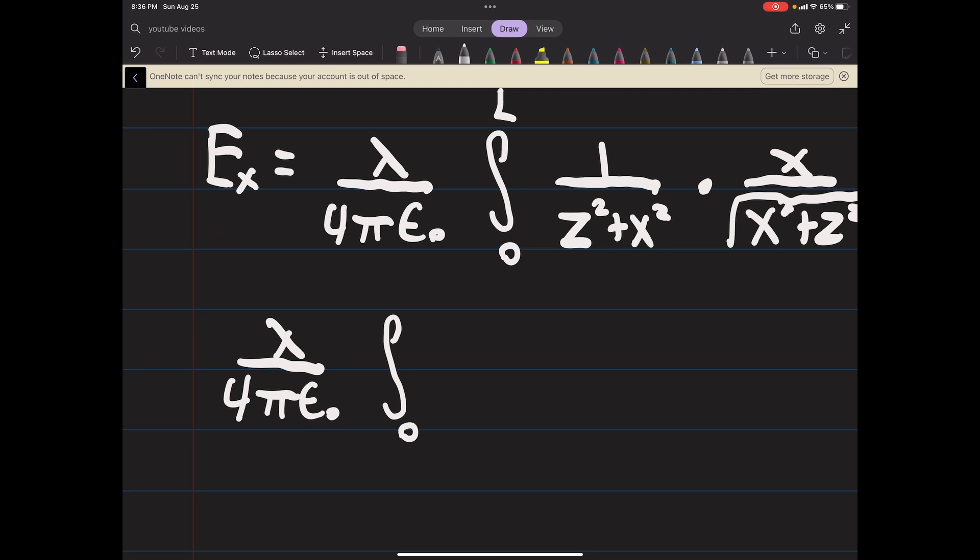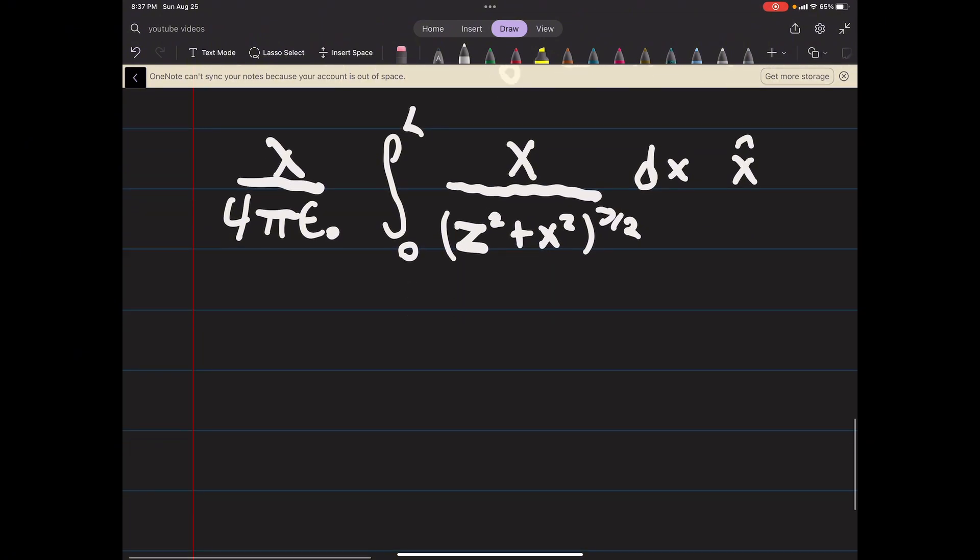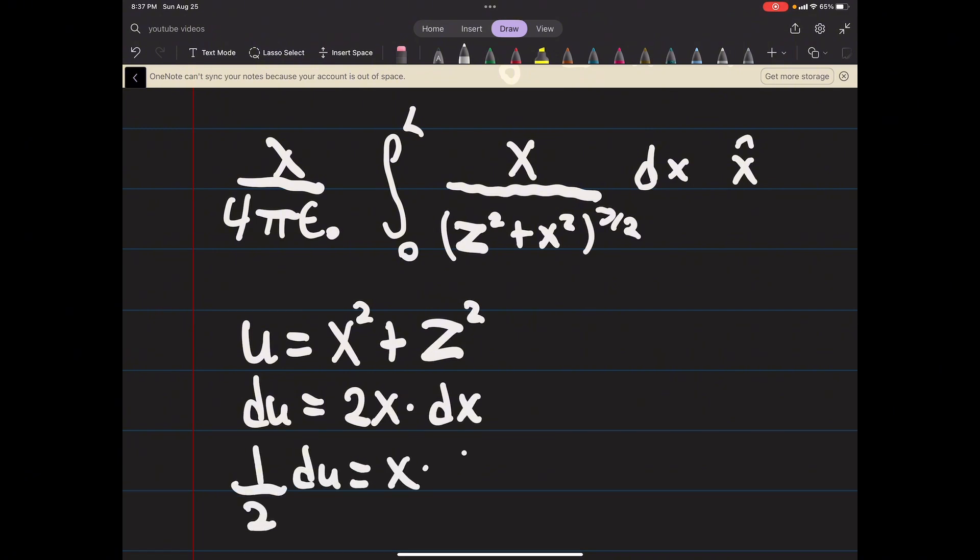So this is lambda over 4 pi epsilon naught, the integral from 0 to L, x over z squared plus x squared to the 3 halves, dx in the x hat direction. This one's actually a lot simpler to solve. It's just through a u substitution where u is x squared plus z squared, and du then is just 2x times dx, or one half du equals x dx.